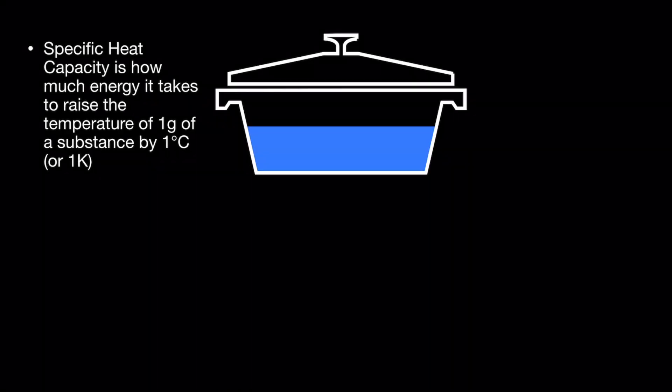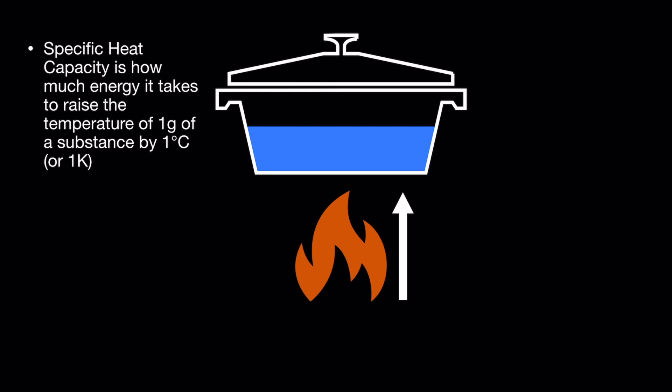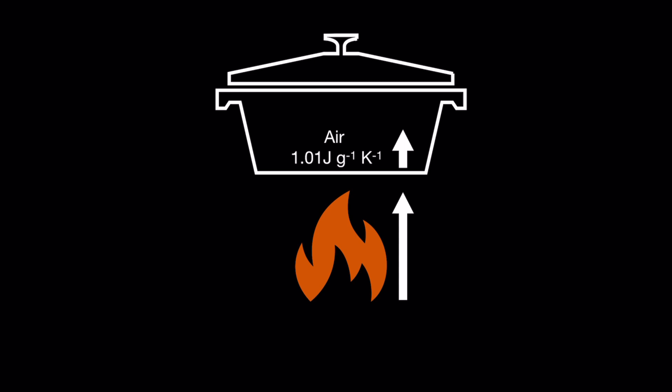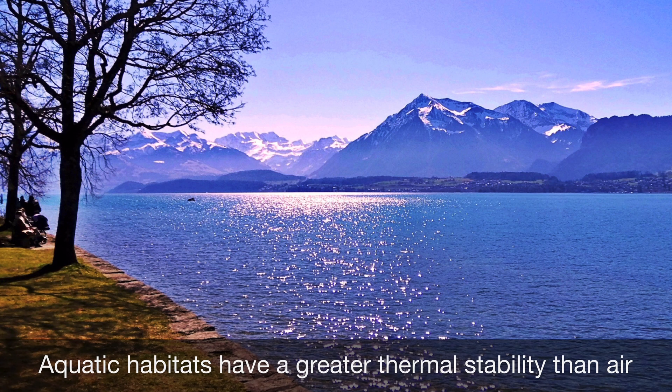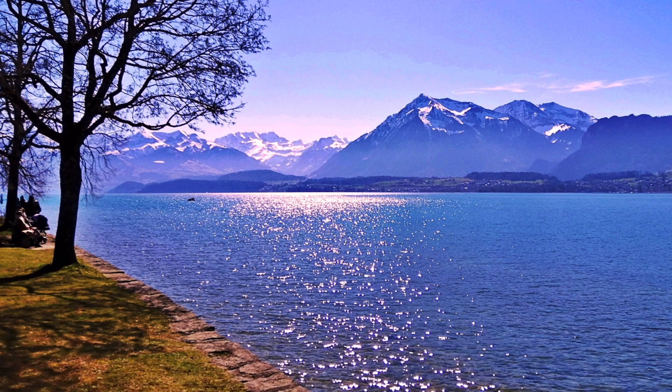The final property we'll look at is specific heat capacity — how much energy it takes to raise the temperature of 1 gram of a substance by 1 degree C or 1 Kelvin. Water has a very high specific heat capacity, meaning it requires a lot of energy to raise the temperature of 1 gram of water by 1 degree C. Air has a lower specific heat capacity, so relatively speaking, it requires less energy to raise the temperature of 1 gram of air by 1 degree C. This means aquatic habitats remain thermally stable compared with air temperatures, making them more thermally stable than terrestrial habitats.